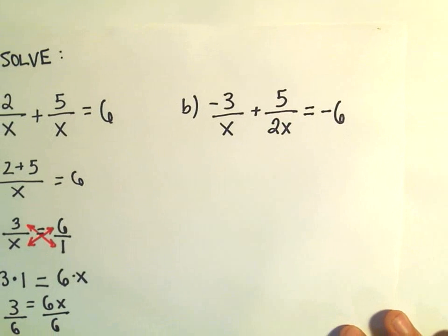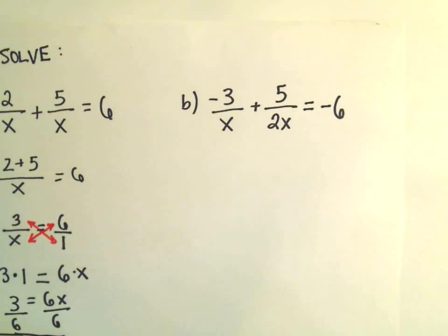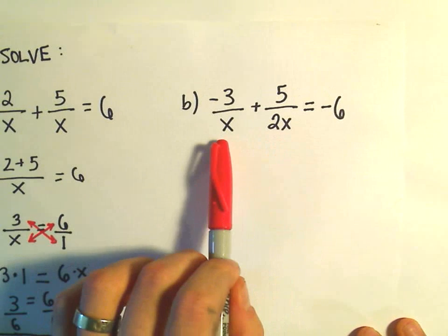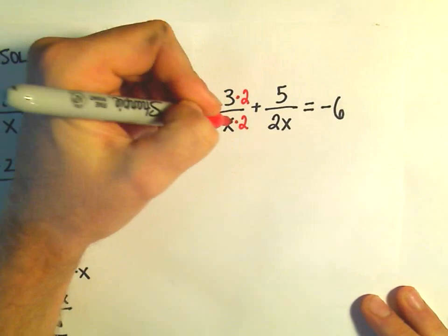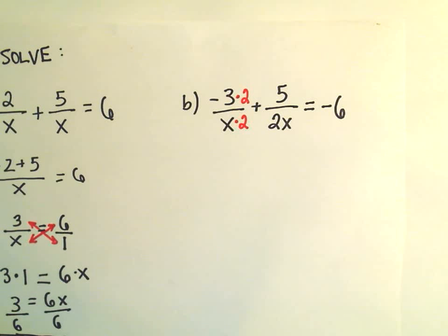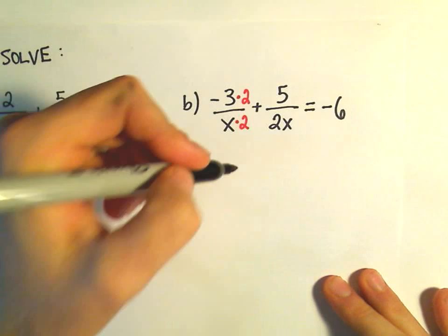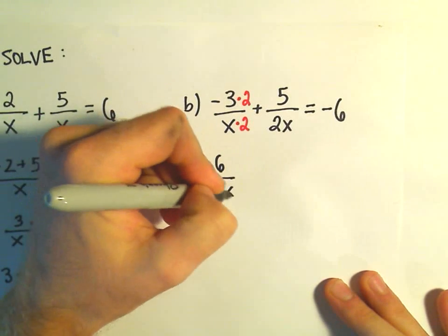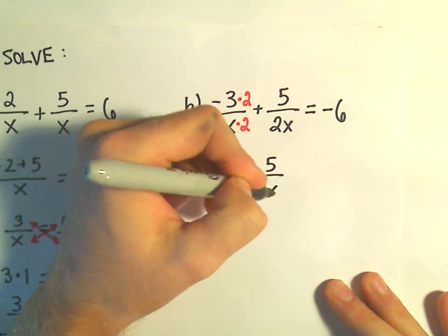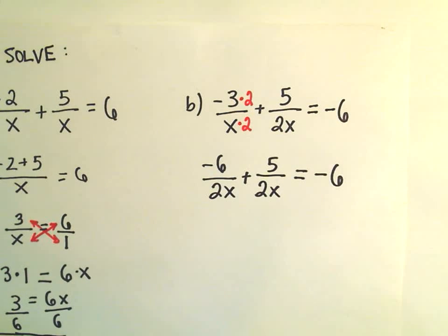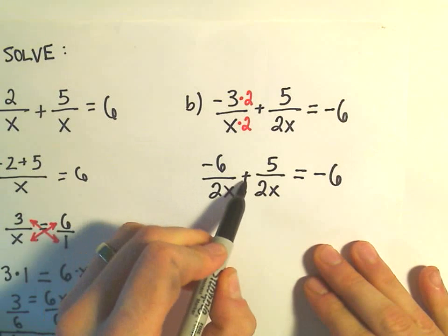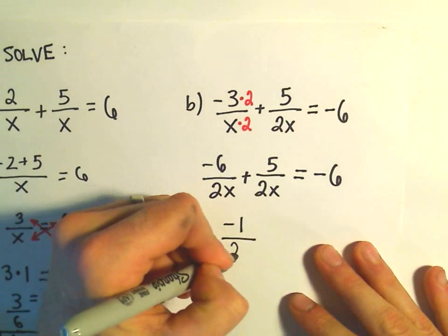The next example: negative 3 over x plus 5 over 2x equals negative 6. We don't have common denominators yet, but since the second fraction has 2x in the denominator and the first only has x, we can multiply the numerator and denominator of the first fraction by 2. That gives us negative 6 over 2x plus 5 over 2x equals negative 6. Now with common denominators, we combine the numerator: negative 6 plus 5 is negative 1 over 2x.